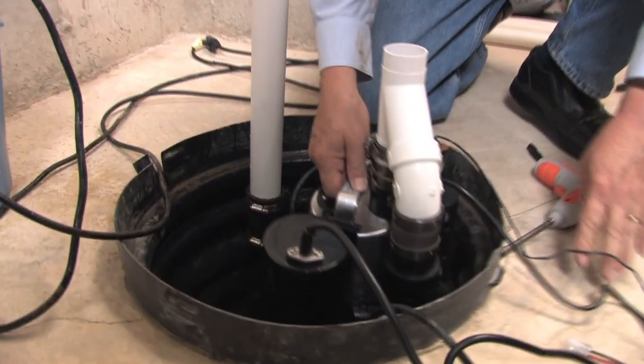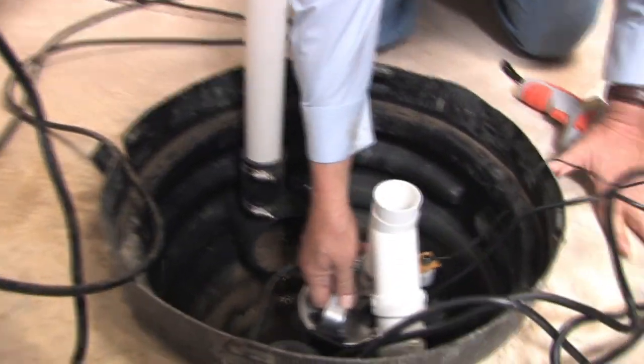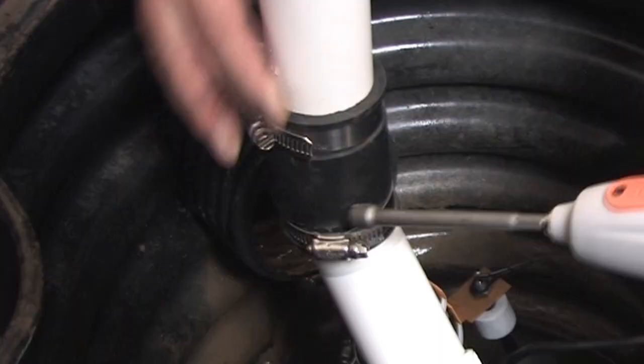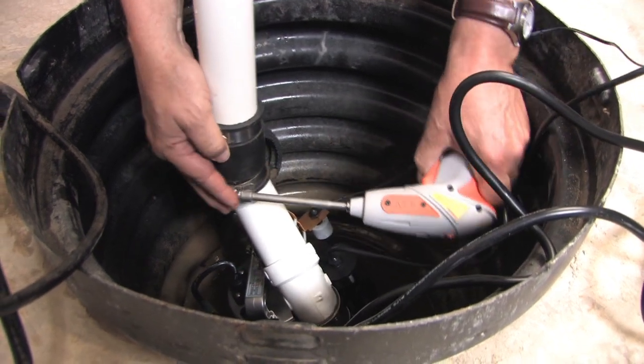Lift the combination system by the handle on the primary pump and lower it into the sump pit. Connect the discharge pipe to the union and tighten the hose clamp.